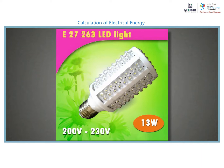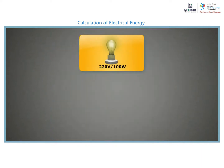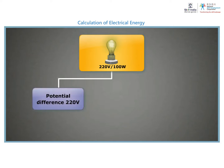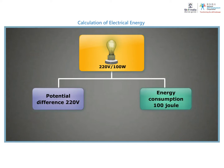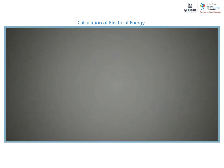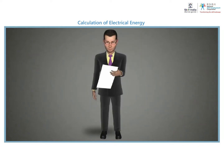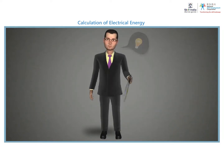Units such as 220 volts and 100 watts printed on an electric bulb indicate that this bulb will glow in a circuit with a maximum potential difference of 220 volts, and it will consume a maximum of 100 joules of energy in one second.